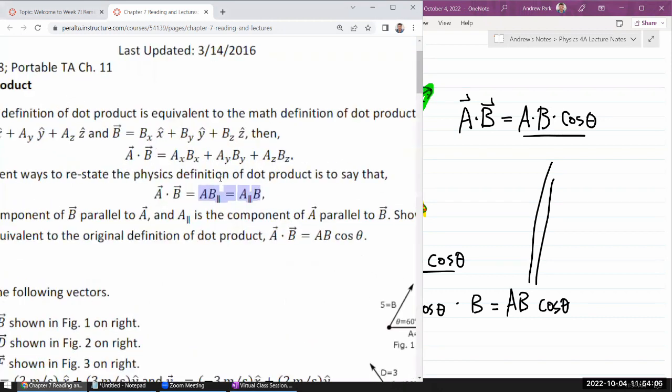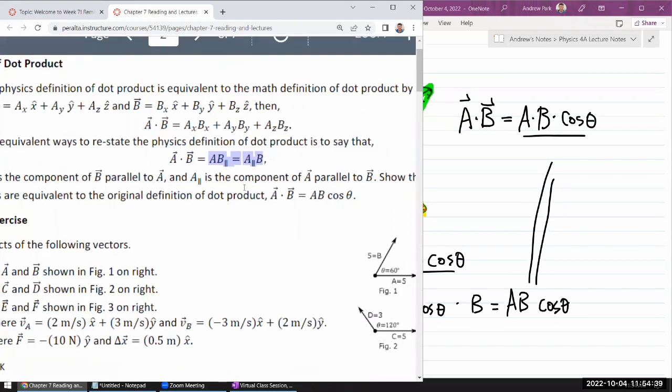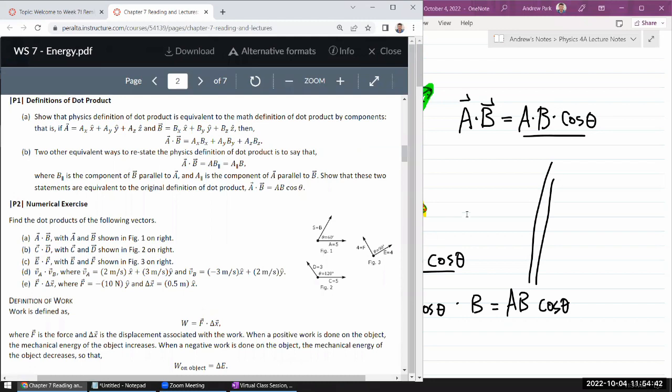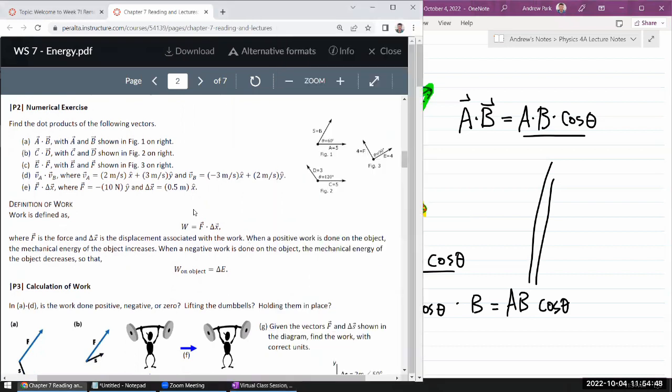And this particular description is useful when we are describing work. Work. Because when we are trying to describe work in English words, we don't really say, Oh, work is force times displacement times cosine theta. What is theta? We don't say that. What I prefer to instead say is force times the component of displacement parallel to force. Or you can actually swap it around. Displacement times component of force parallel to displacement. And they will give you the same mathematical quantity. So yeah, that's it. That's that one B.